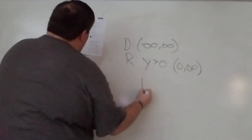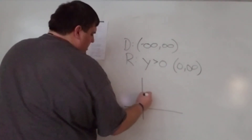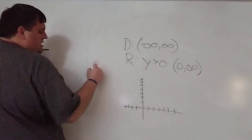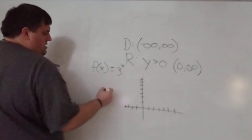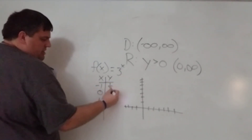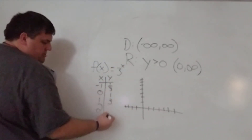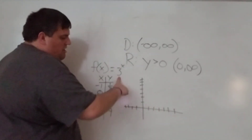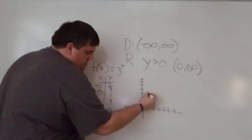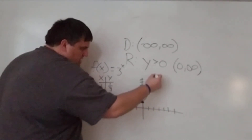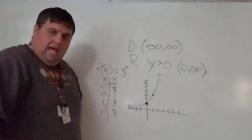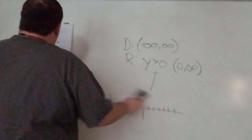For the graph, you can make a quick table of values: x equals negative one gives one-third, zero gives one, one gives three, two gives nine. We know it's exponential growth with a y-intercept at one. Plot those key points and your graph should show that classic growth curve — easy for me to grade if you include the table.